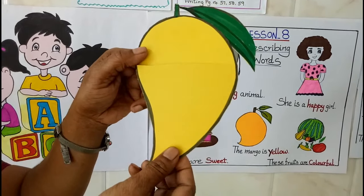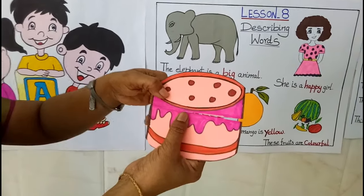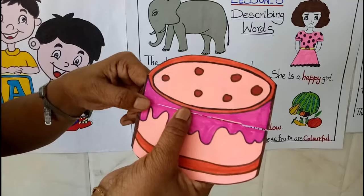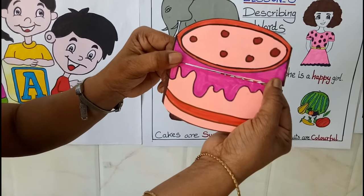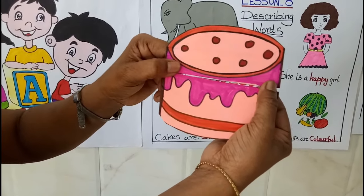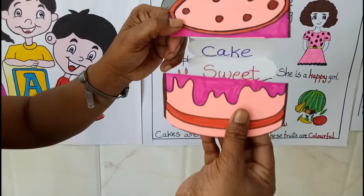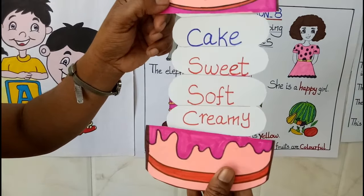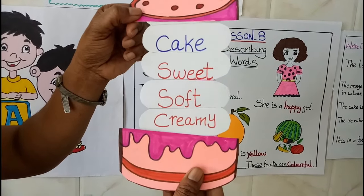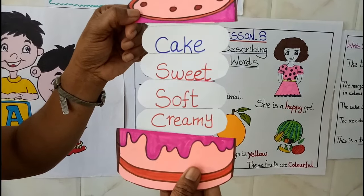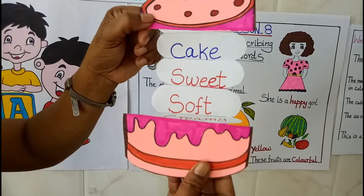Now I will show you another picture. Tell me, what picture is this? Yes, cake. Now we are going to describe about cake. Cake is sweet. Cake is soft. Cake is hot. Cake is creamy. Very good.